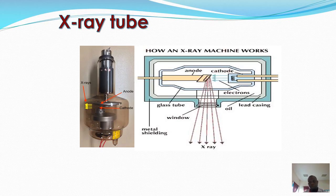Electrons move from the cathode and go to the anode. The electrons from the heated filament move to the metal anode and are used to produce X-rays. Those are the two diagrams: the actual X-ray tube and the physics diagram for the X-ray tube.